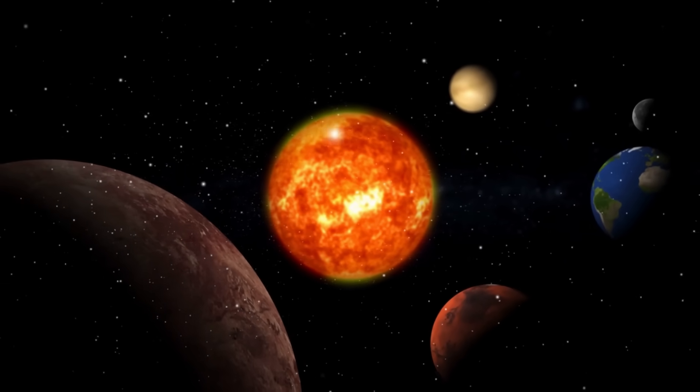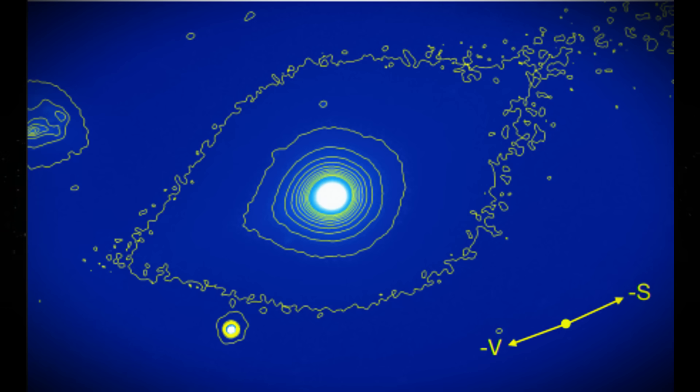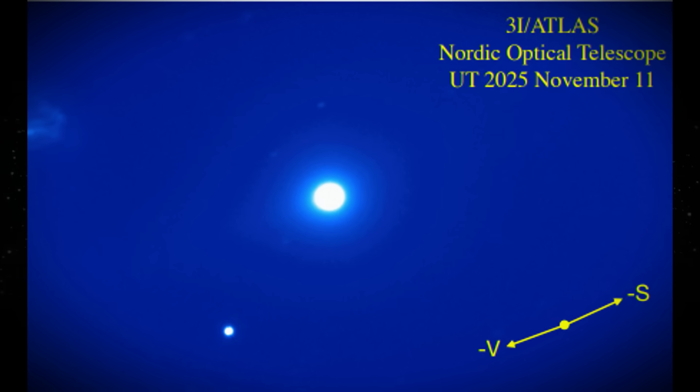Avi Loeb counters this position by pointing out that we've detected only three interstellar objects so far in all of astronomy's history. The third object hitting a 1 in 26,000 probability is like winning the lottery on your third ticket. Technically possible, but so unlikely that it raises serious questions.